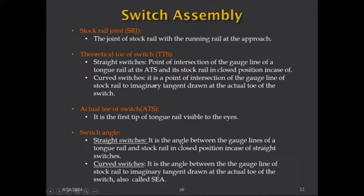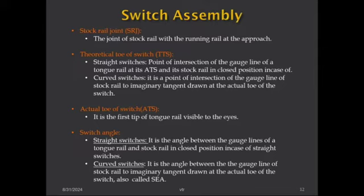In the case of curved switches, the TTS is the point of intersection of the gauge line of the stock rail with the imaginary tangent drawn at the actual toe of switch. The actual toe of switch (ATS) is the first visible tip of the tongue rail — normally we ensure 6mm thickness at the toe of switch to avoid damage. The switch angle is the angle between the gauge line of the tongue rail and the stock rail in closed position (for straight switches), and for curved switches it is called the switch entry angle.